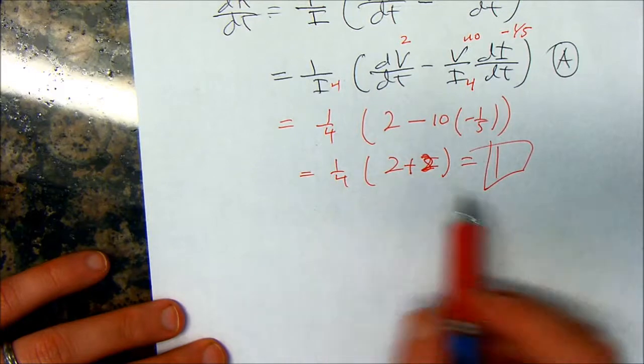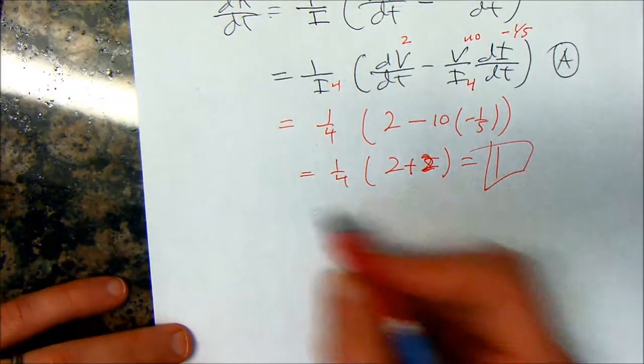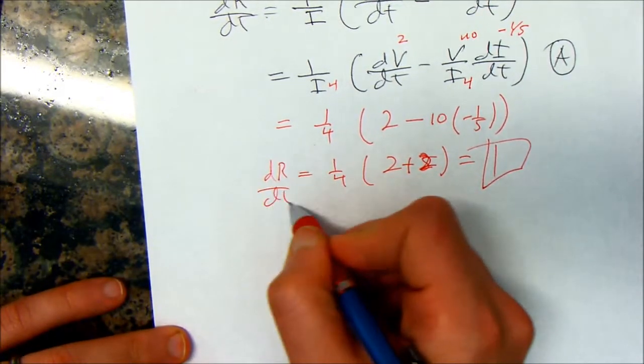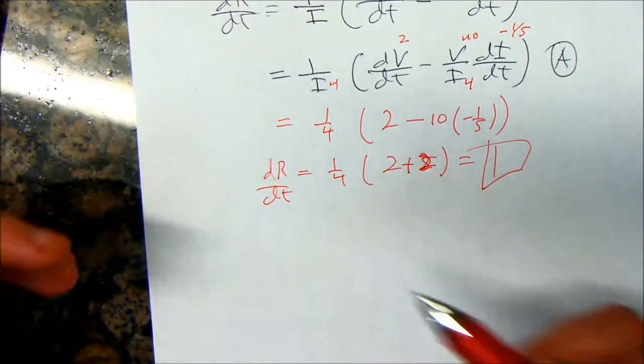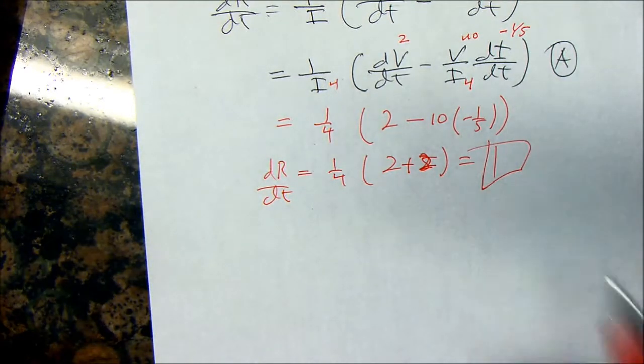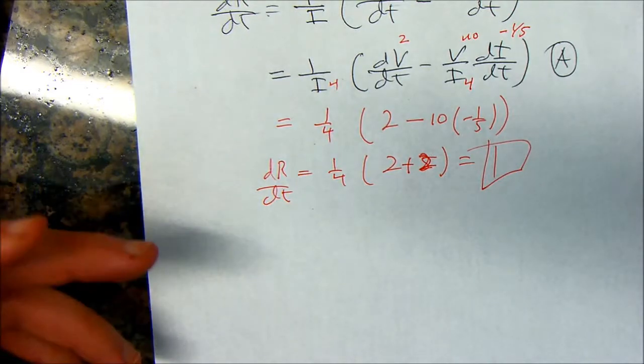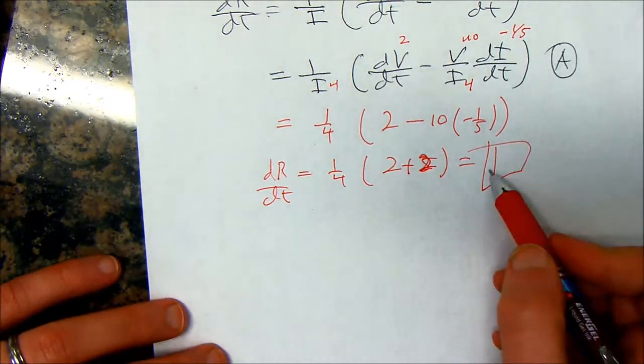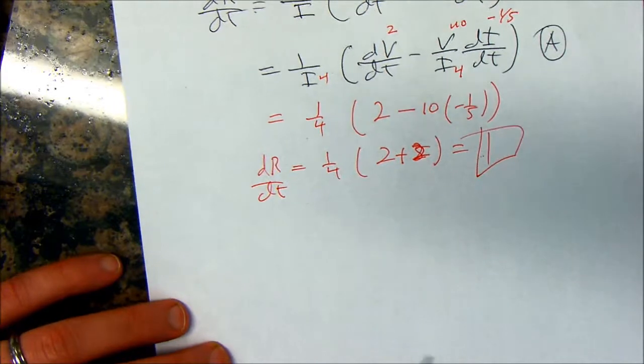Is R increasing or decreasing? Well, look at the sign. This is dR/dt. So, the rate of change of the resistance is 1 ohm per second. But it's increasing because this is positive.